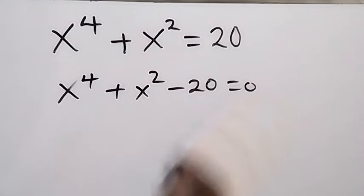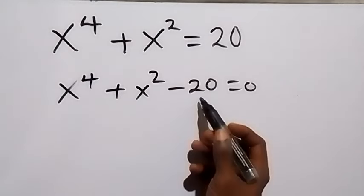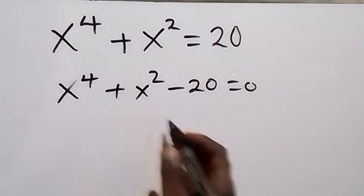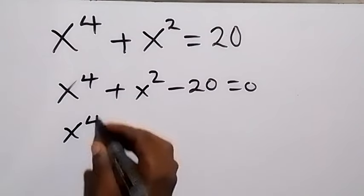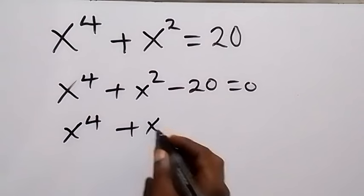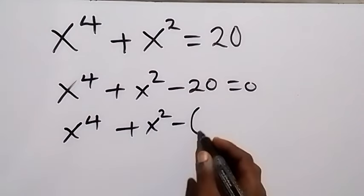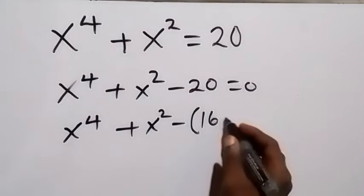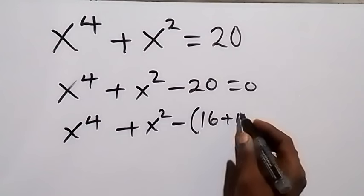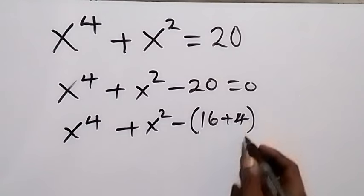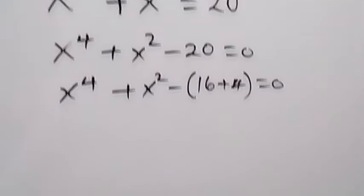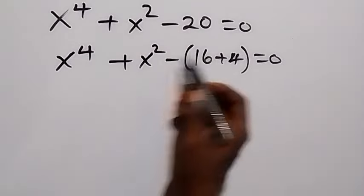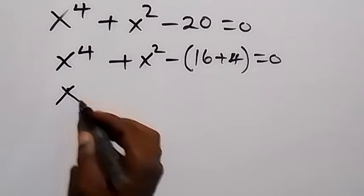Now equals to zero. From here we can separate this 20 and say 16 plus 4. We have x raised to power 4 plus x squared minus bracket 16 plus 4, because 16 plus 4 is 20, which is equal to zero.